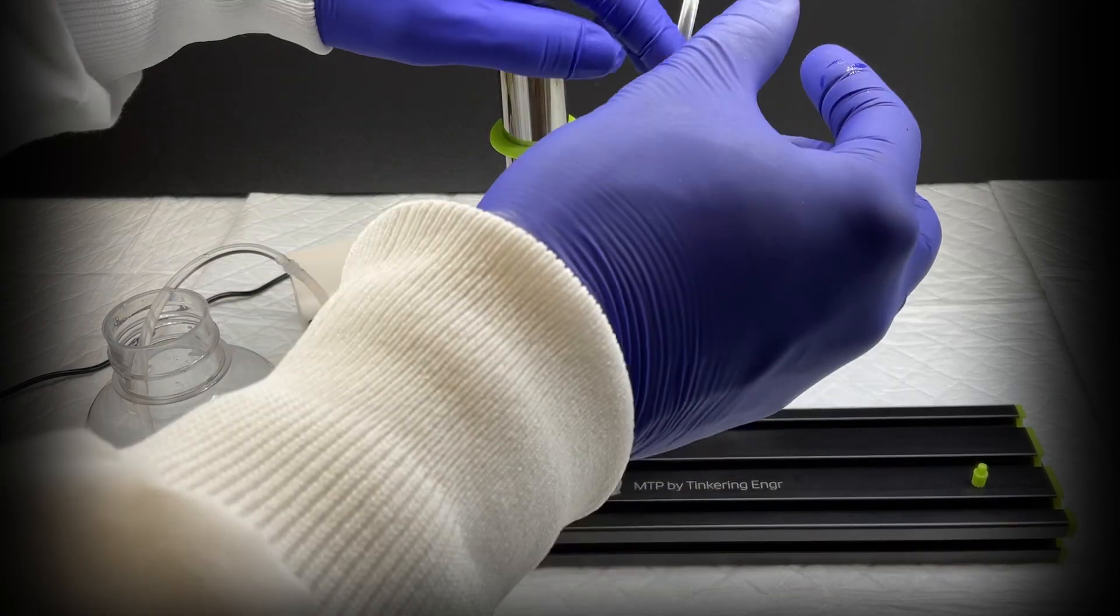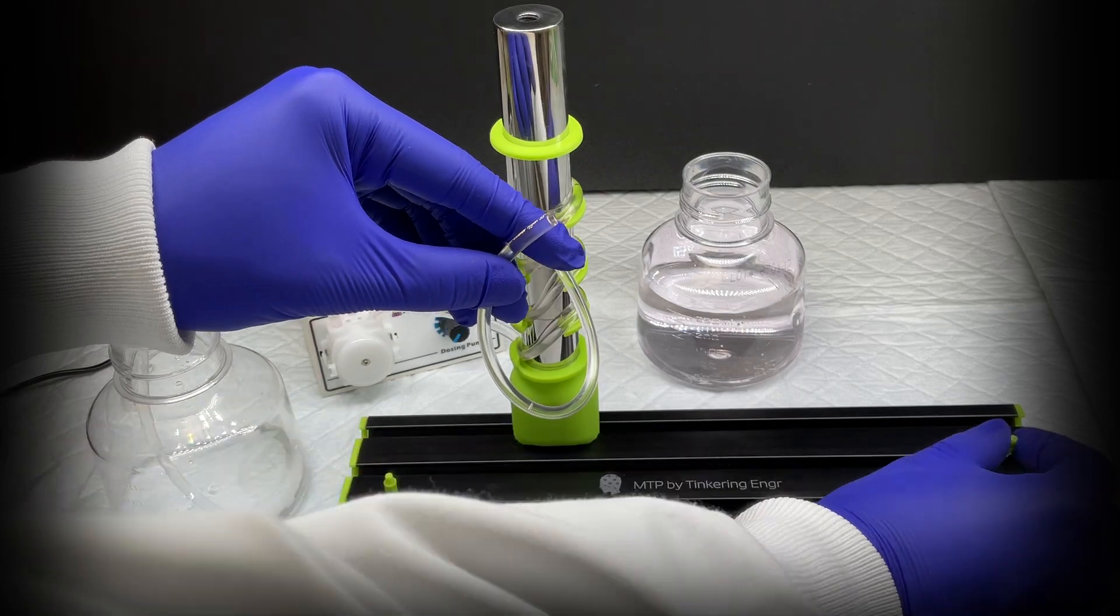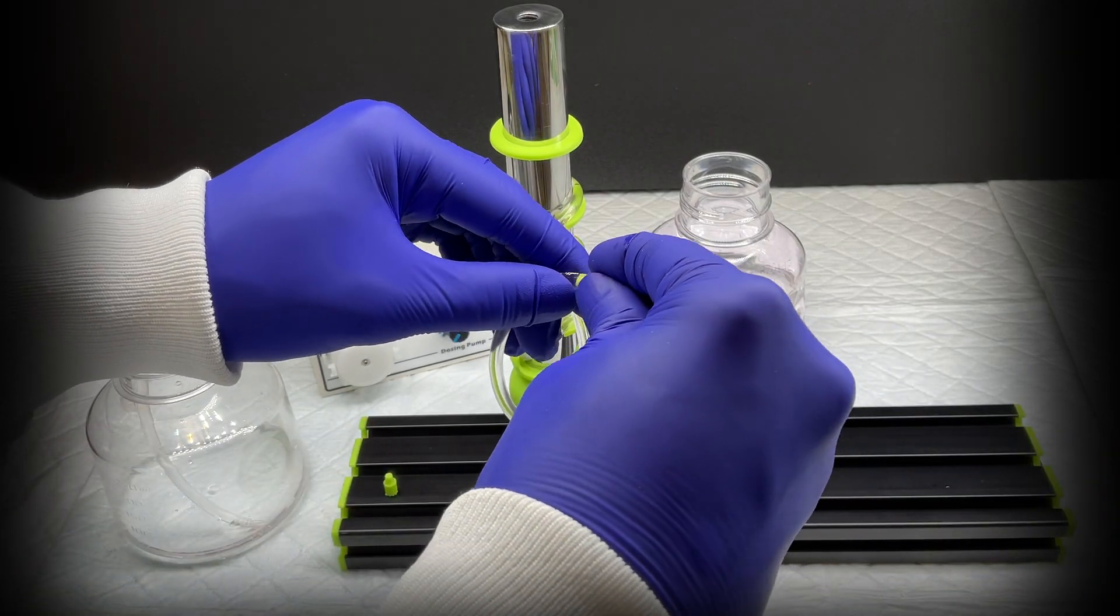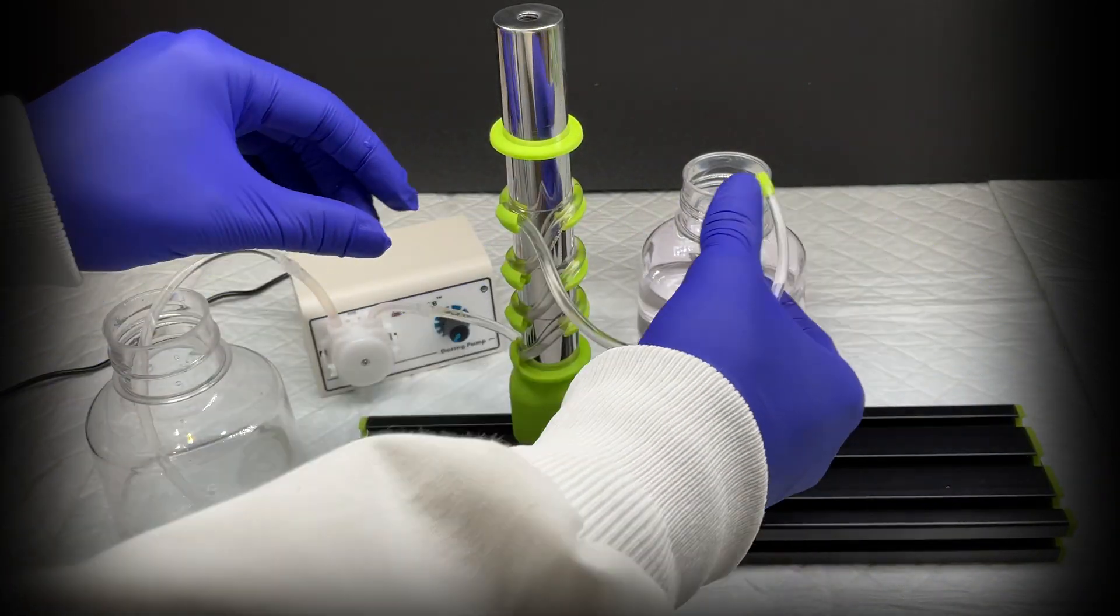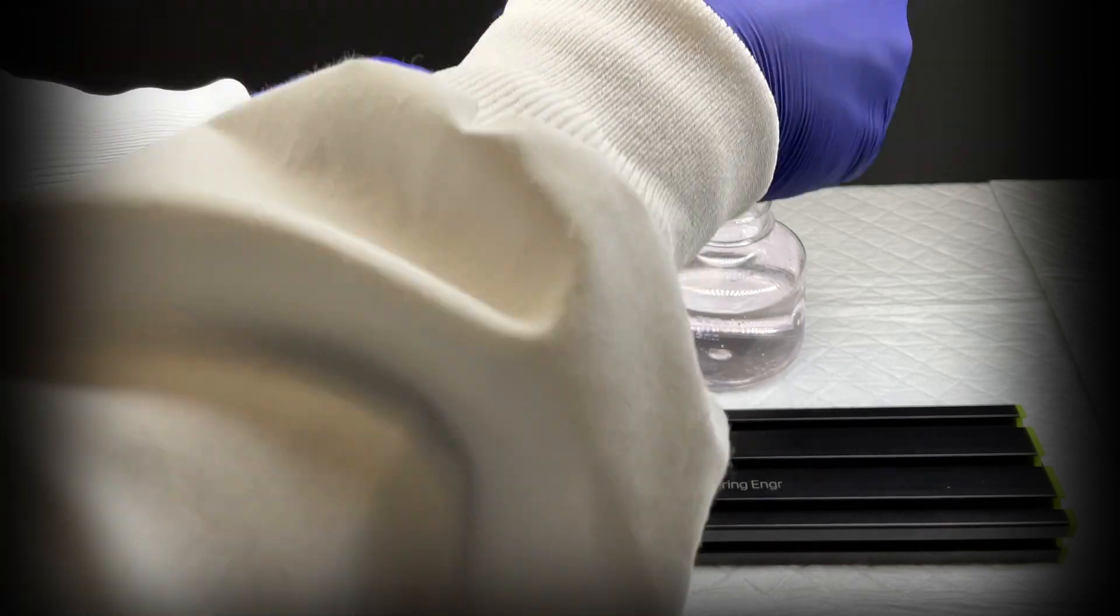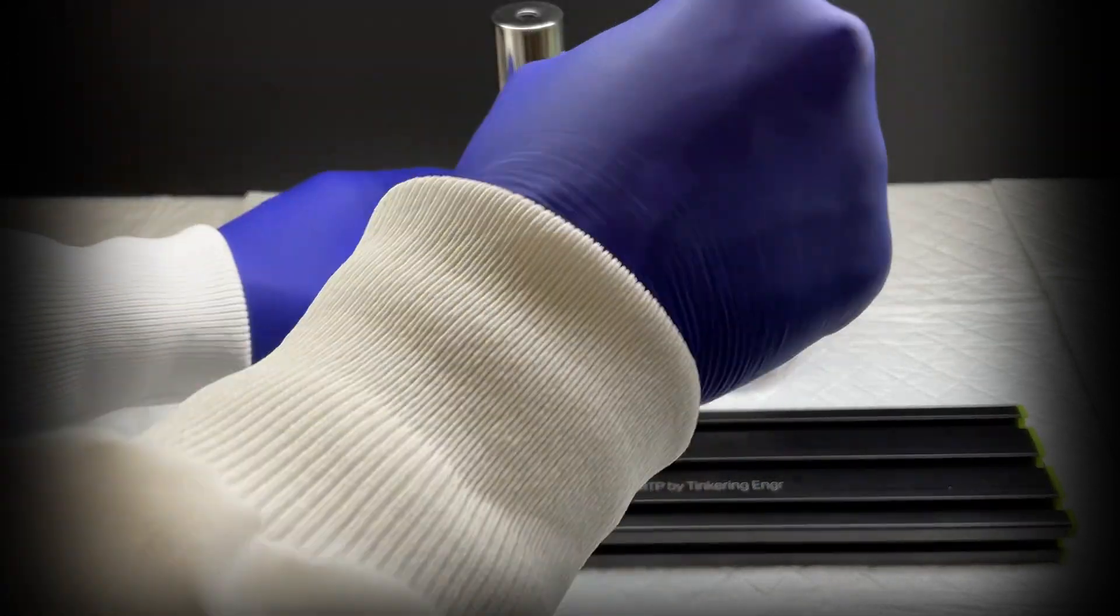With the magnetic resin trapped in the tubing, we now need to reduce the volume of the tubing to a desired elution volume, commonly in the microliter range. Using 3D printed stoppers, we can cap both ends of the tubing and unwind the tubing from the apparatus.